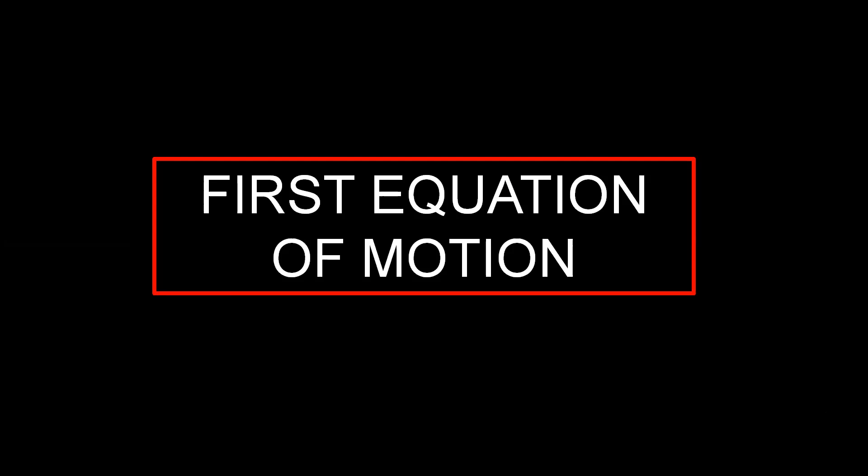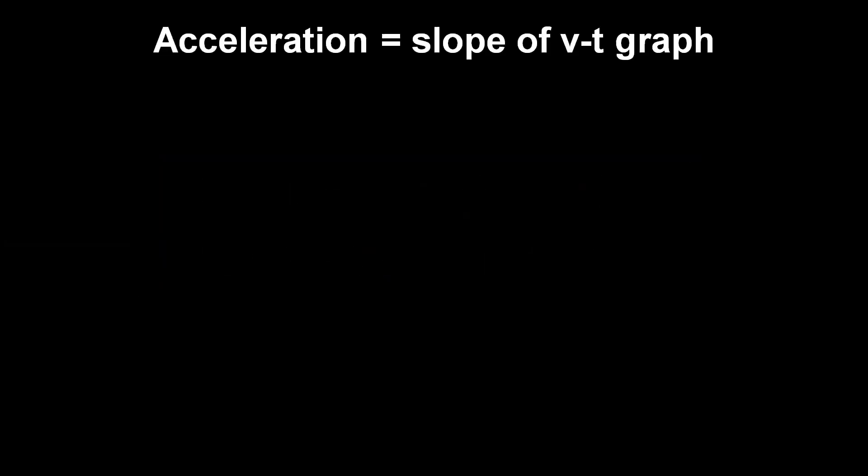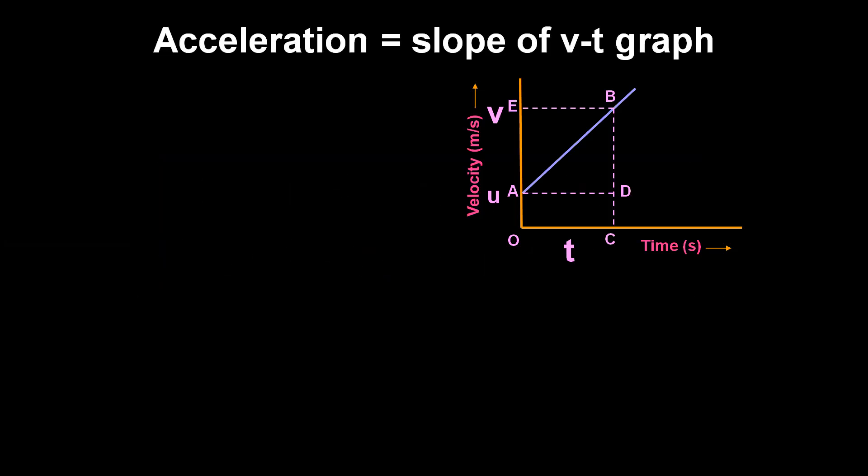The first equation of motion is derived from one key concept: acceleration is equal to the slope of the VT graph. This information will be used to derive the first equation of motion. The velocity-time graph has a specific shape, which I will explain.